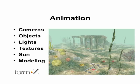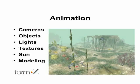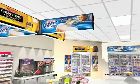Form Z allows you to animate every aspect of your 3D project, such as cameras, objects, lights, textures, and the sun. You can even use the animation tools as a modeling tool to be able to explore many different 3D shapes and forms by modifying the animation parameters.